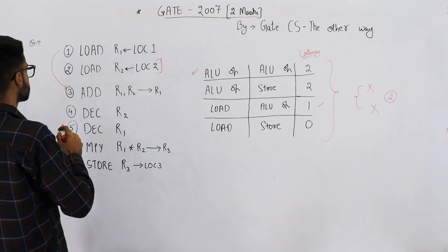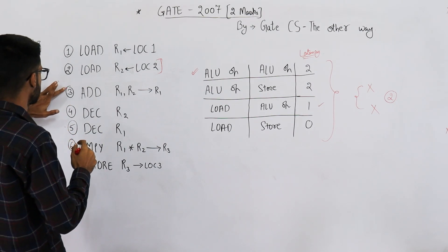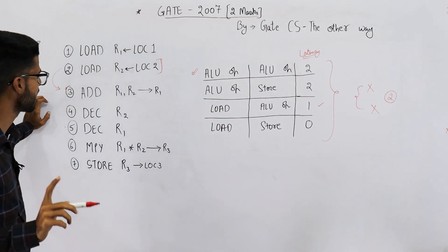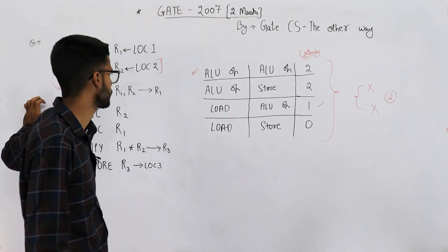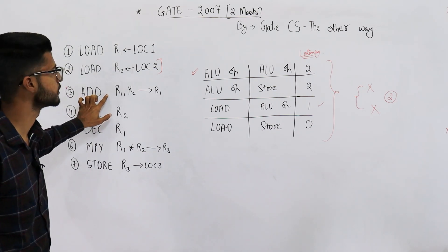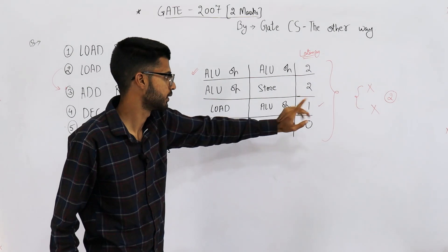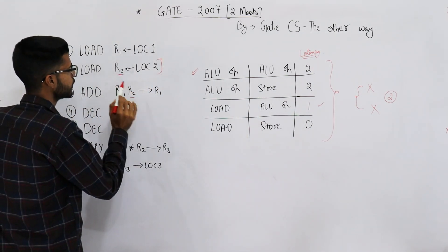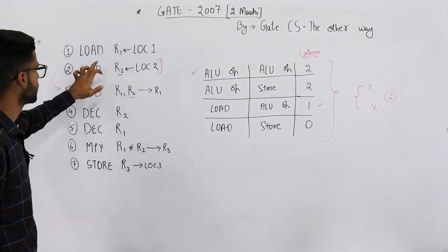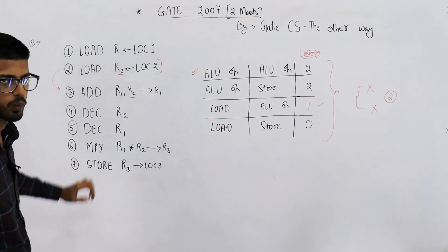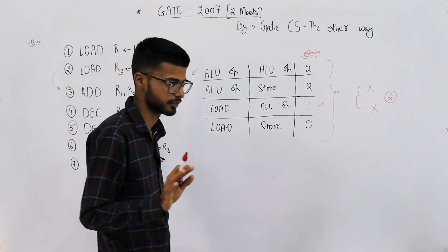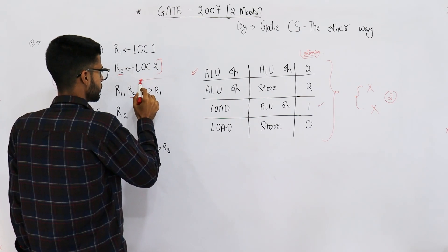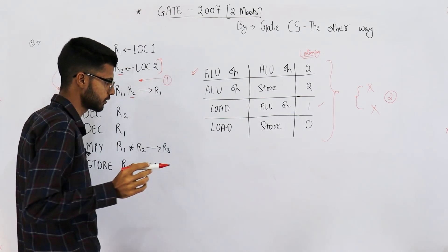Between instruction two and instruction three there has to be a latency of one clock cycle, because instruction two is a load and instruction three is an ALU operation — load and ALU require a latency of one. That means after executing instruction two, one clock cycle has to be wasted, or the CPU is going to stall for one clock cycle.